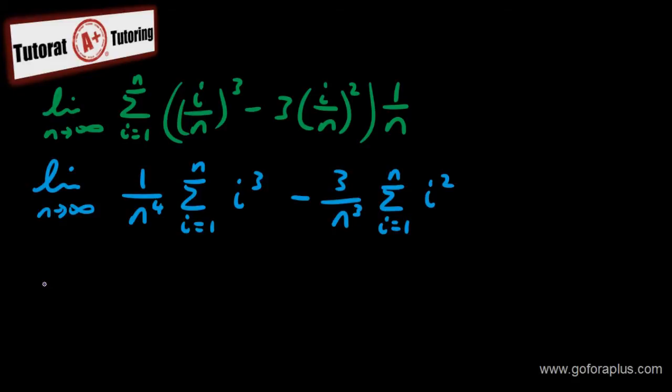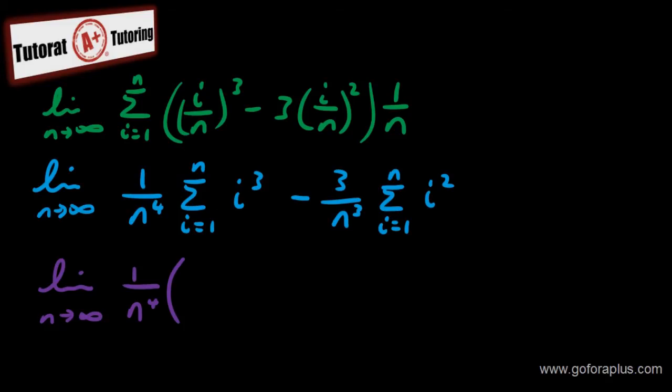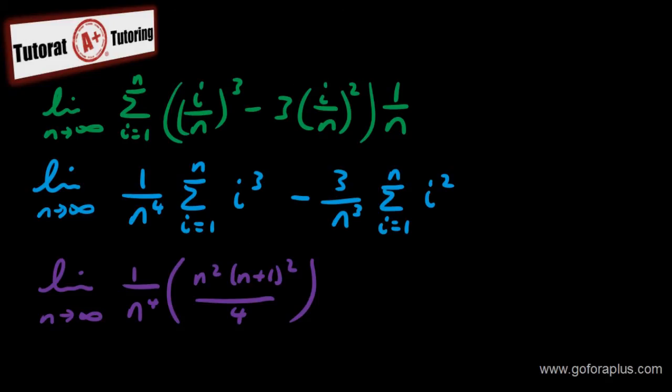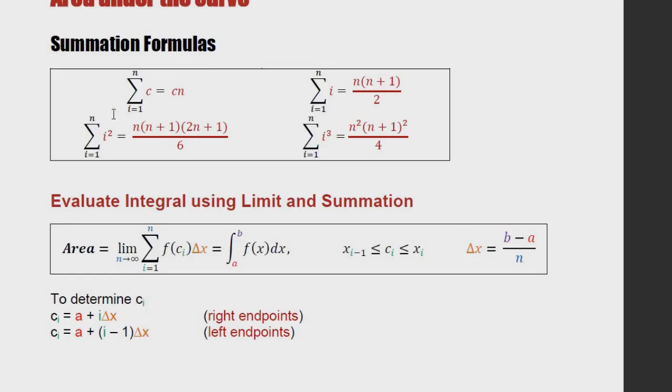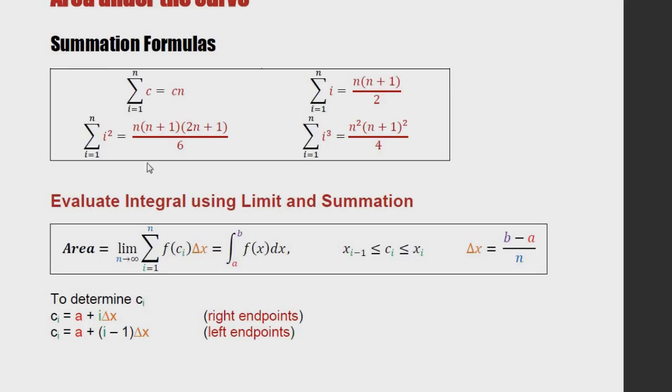So I will be switching screen time to time. So to replace this formula, it's i cube, so I will put it as this, n square times n plus 1 square over 4. So n square times n plus 1 square over 4. Let me double check that. So this is that. Now i square, I have to replace it with this one. And then subtract 3 over n cube. I will place that with this equation now, n times n plus 1 times 2n plus 1 over 6. So n times n times n plus 1 times 2n plus 1 over 6. And let me double check that again. One more time. Yeah, so that's good.